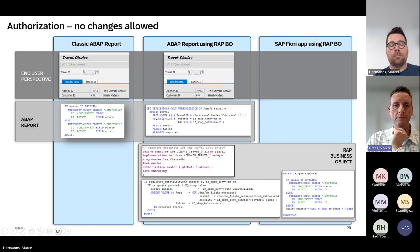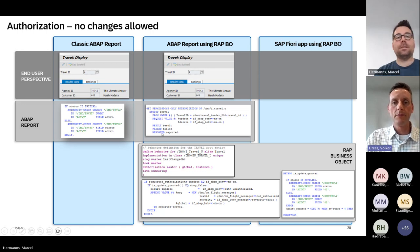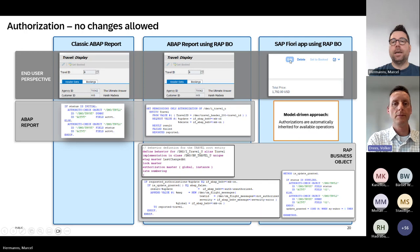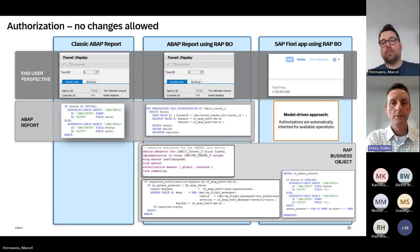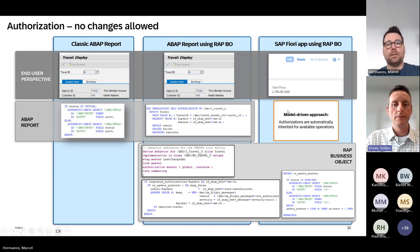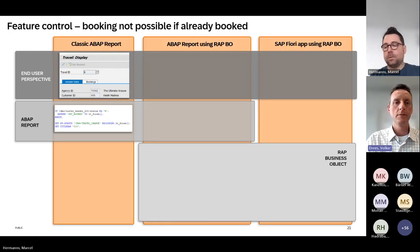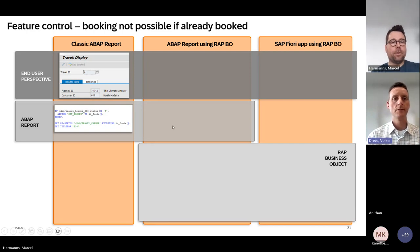GET PERMISSIONS returns feedback for update, delete, and whatever is requested — a fully typed API that looks the same for all business objects. In Fiori, we don't need to call that to disable the edit button — we follow the model-driven approach. RAP/ABAP Cloud will forward this information to Fiori Elements via OData, which ensures the edit button is disabled. At runtime, if someone tries to edit via OData directly, it is still checked to ensure nothing goes wrong. The same applies to feature control — for example, disabling the Set Booked button once a travel is already booked.